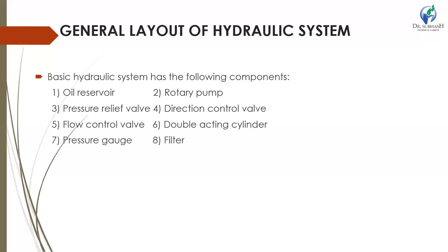The sixth component is the actuator. The actuator produces work. There are two types of actuators: linear actuators and rotary actuators. A linear actuator is called a cylinder; a rotary actuator is called a motor. A double acting cylinder develops force and motion — it converts hydraulic energy into mechanical energy. The force developed is equal to the pressure of oil multiplied by the area of the piston.